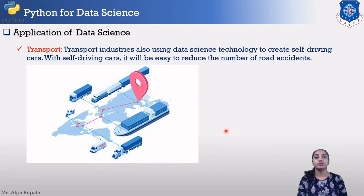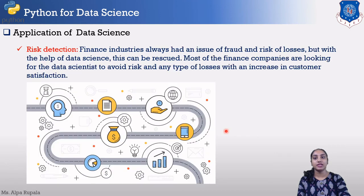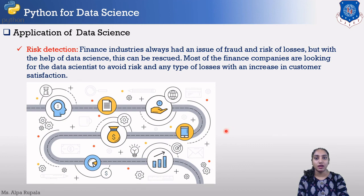Next is transportation. We are also using self-driving cars — you may have heard of Tesla's self-driving car. In the future, the industry can have numerous self-driving cars, trains, and planes. Next is healthcare, where data science is used for disease detection, drug discovery, medical image analysis, and virtual medical bots. Finally, risk detection: in the financial industry, data science can predict whether a particular share has higher risk, helping decide whether to buy or not.